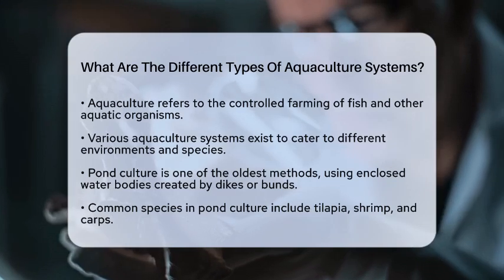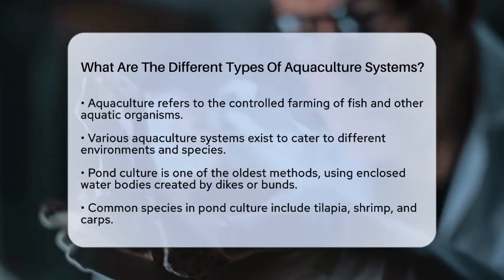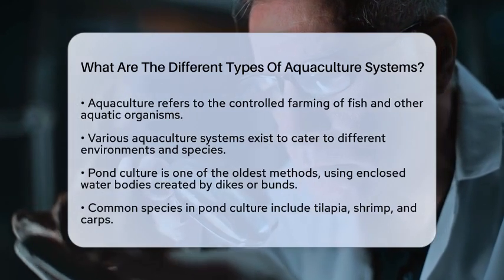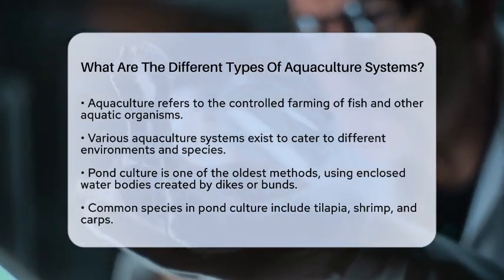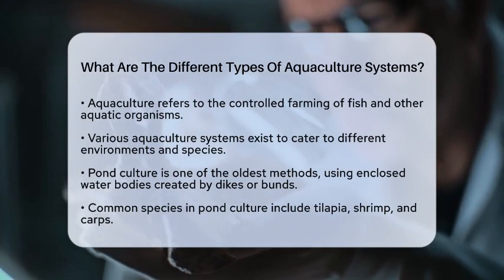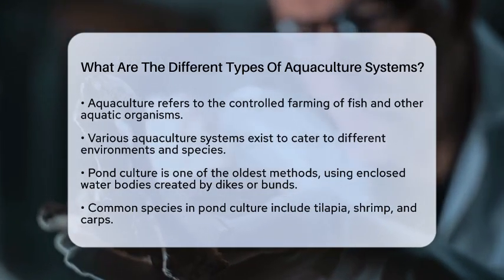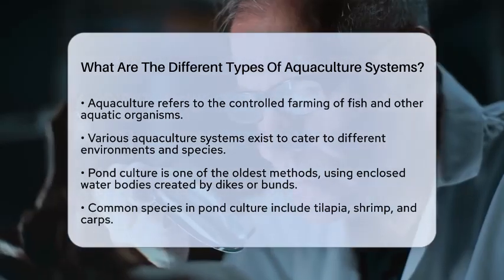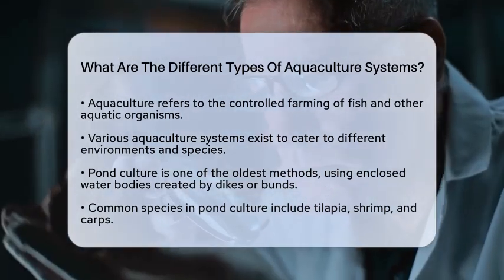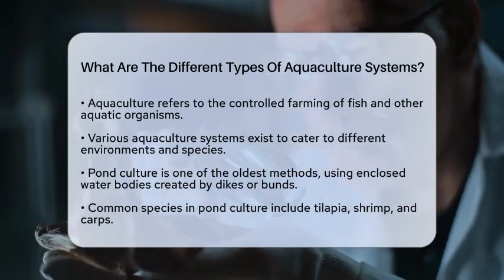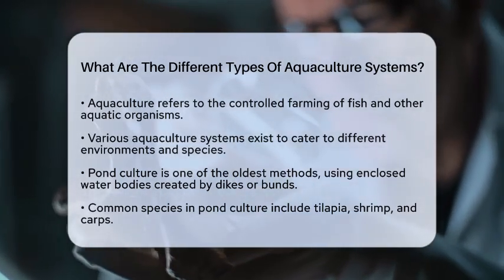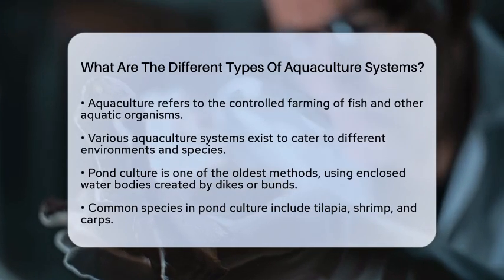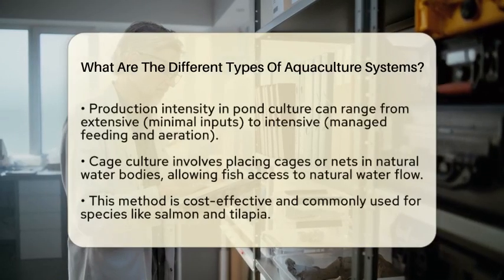First, we have pond culture, which is one of the oldest methods. This system creates enclosed water bodies, often using dikes or bunds. Ponds can be natural or lined with materials like clay to hold water. Common species raised in ponds include tilapia, shrimp, and carps. The intensity of production can vary from extensive, with minimal inputs, to intensive, where feeding and aeration are closely managed.